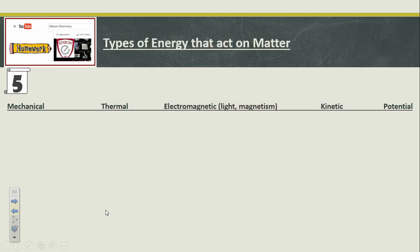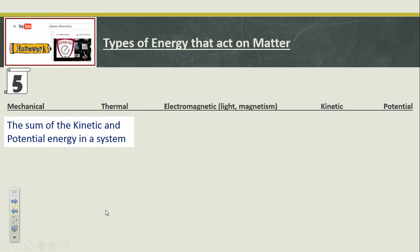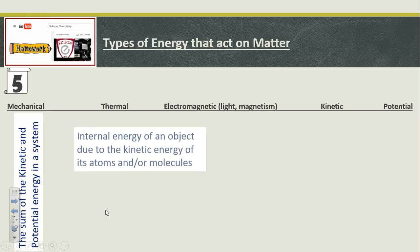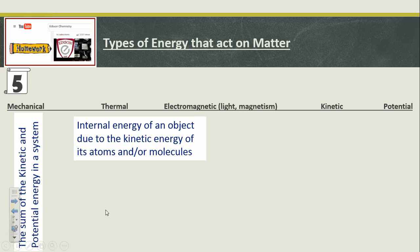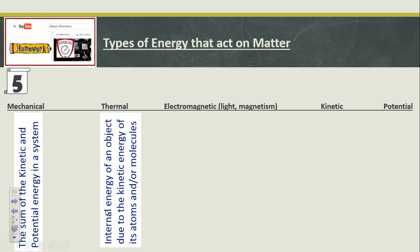So there's some types of energy that act on matter. Mechanical energy is like kinetic and potential in the system. Like if I'm cranking a crank, that's mechanical type energy. Thermal energy is the energy of an object due to kinetic energy of its atoms and or molecules. It's one way to look at how hot something is, how much heat something has in it. It's just thermal energy. It makes the molecules move at the atomic level.